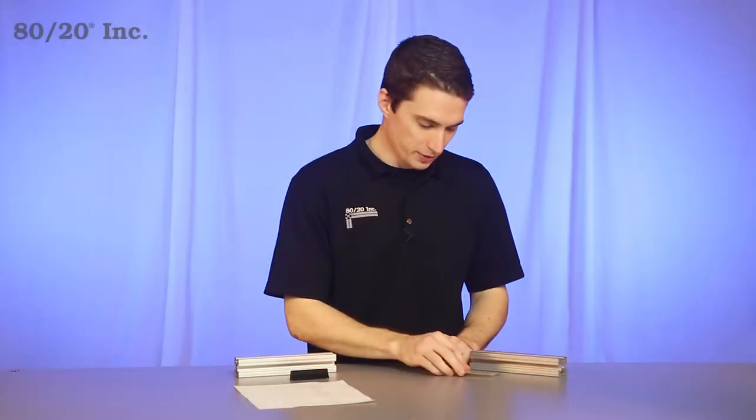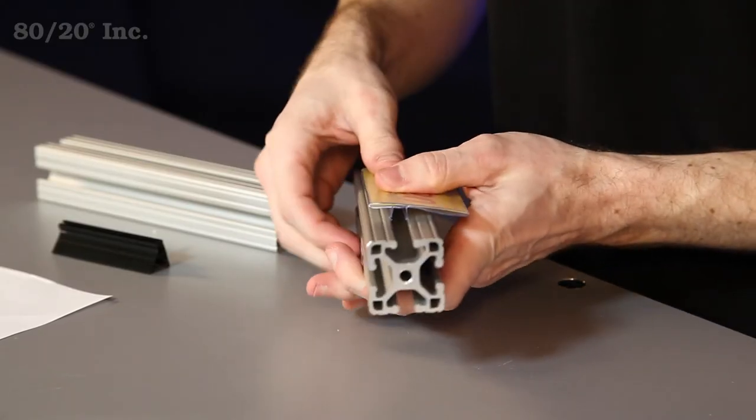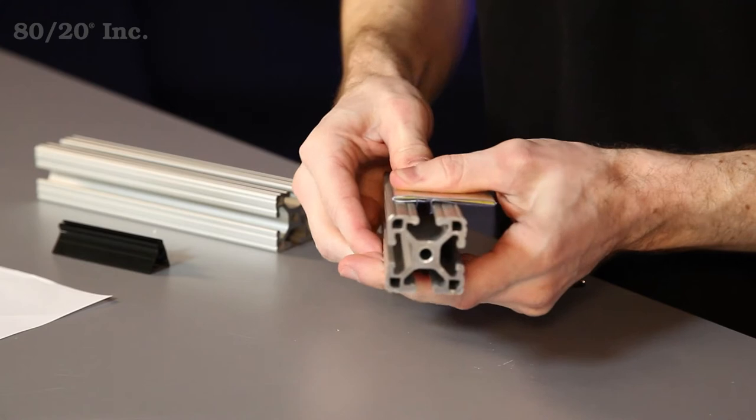Now we'll start with the label holder. You simply put your label in, line it up over the T-slot, and pop it right into place.